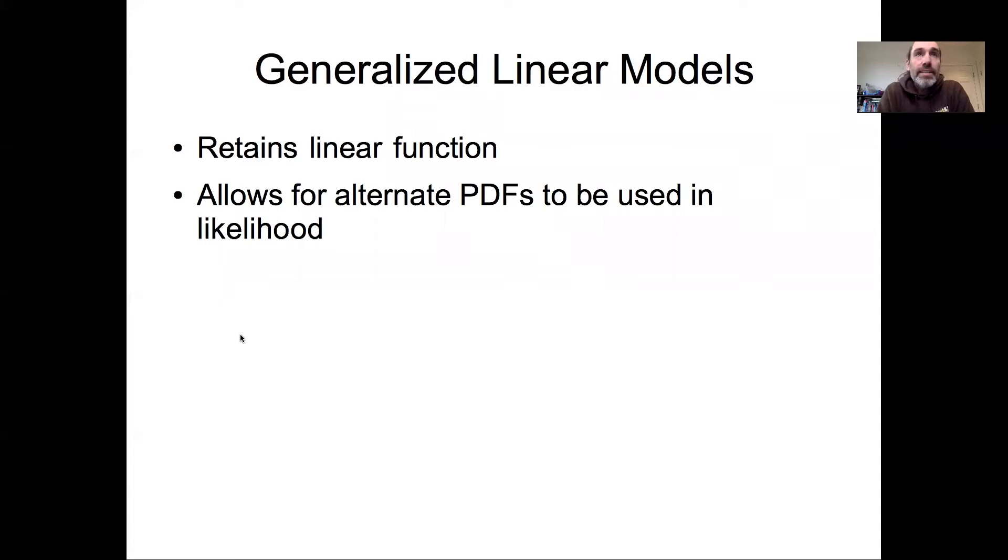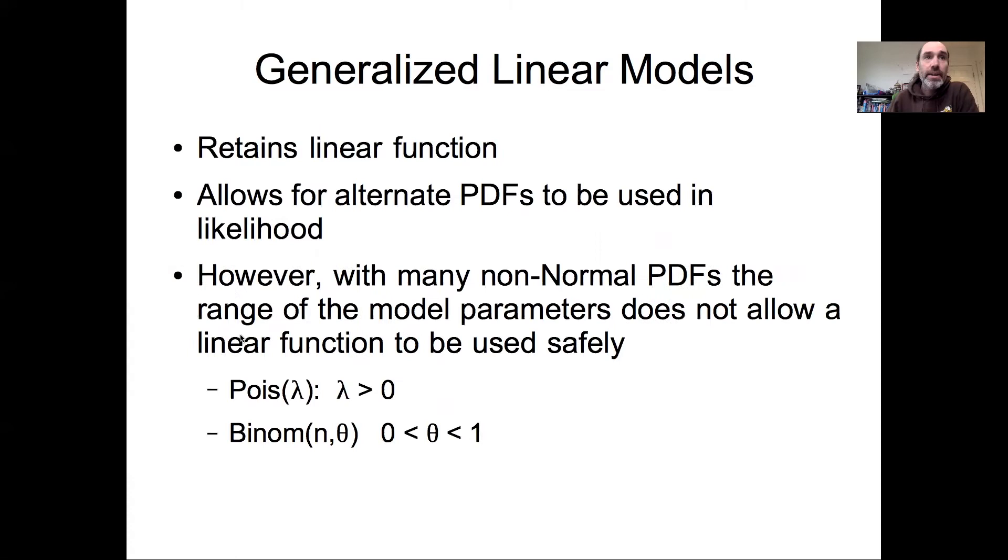So the idea of the generalized linear model is to retain that linear function but allowing alternative probability distribution functions to be used in the likelihood. The real challenge here is that for many of those PDFs, the range that the model parameters are allowed to take on is not minus infinity to infinity, which is what it is for the linear model in the normal assumption.